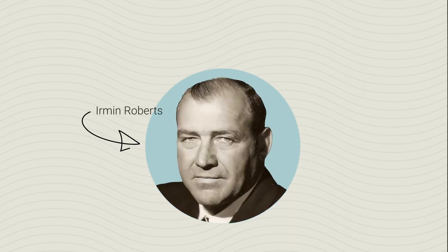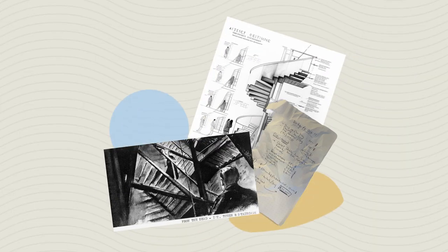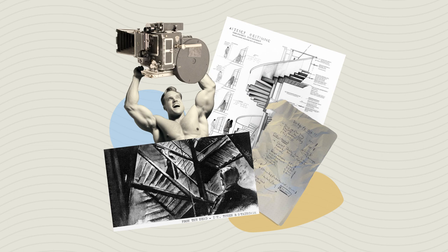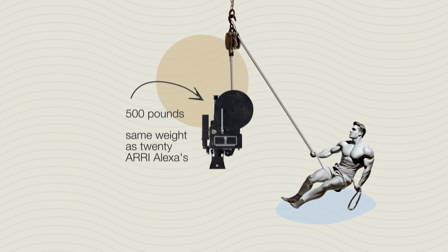The film Vertigo, released in 1958 and directed by Alfred Hitchcock, was the first film to use the vertigo effect. When filming Vertigo, the director of photography of the second unit, Ehrman Roberts, came up with the idea of using the dolly and zoom simultaneously. However, the cost of using the dolly and zoom on real stairs was estimated to be fifty thousand dollars, as it costs a lot to use a big apparatus to lift the camera to the top of the stairs and counterweight it while holding it in space.